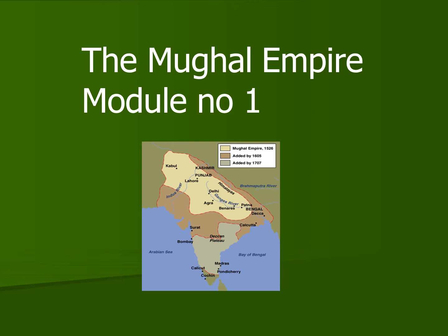Now we all know that the Indian subcontinent was very big and there was a lot of diversity in terms of people, customs and culture. It was very difficult for one particular ruler to control all of India, but the Mughals had that capability and they created an empire and started to rule over India over a very short period of time.